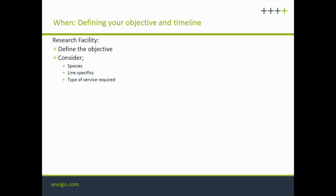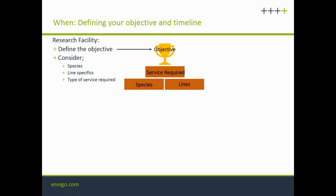You also need to consider the type of service you require as a consequence. With a particularly complex line you might require a certain type of service, whereas with another line you might require a different type. Once you've defined your objective, you should have a clear picture — for example, if you're doing large scale, you might have 100 mouse lines to sperm cryopreserve and then 80 lines to revitalize, because 20 of those lines you just want to maintain in cryo storage.